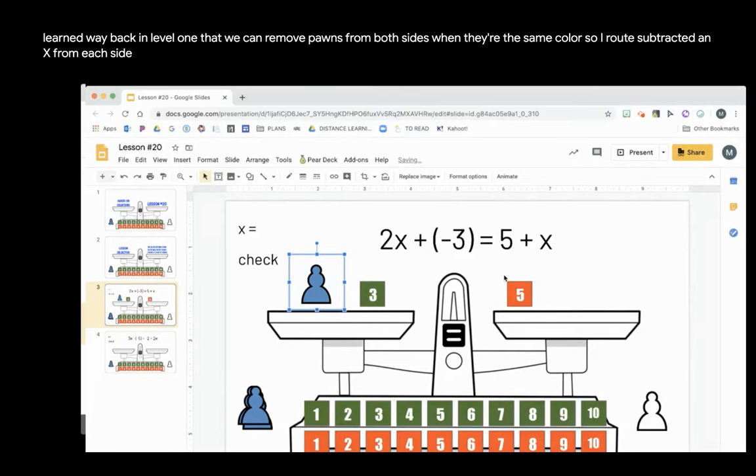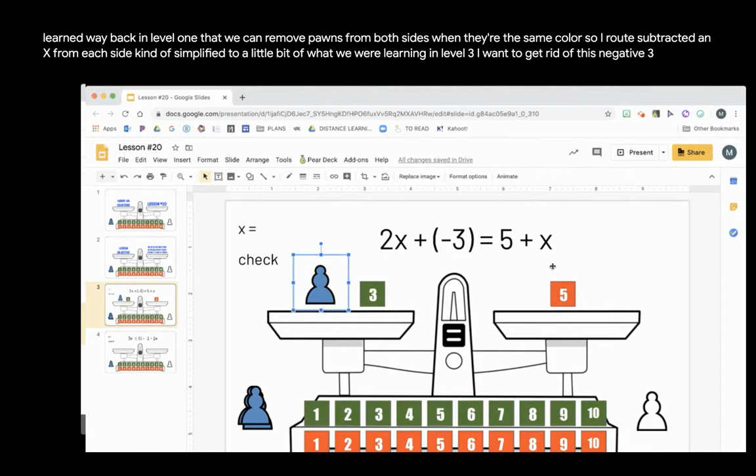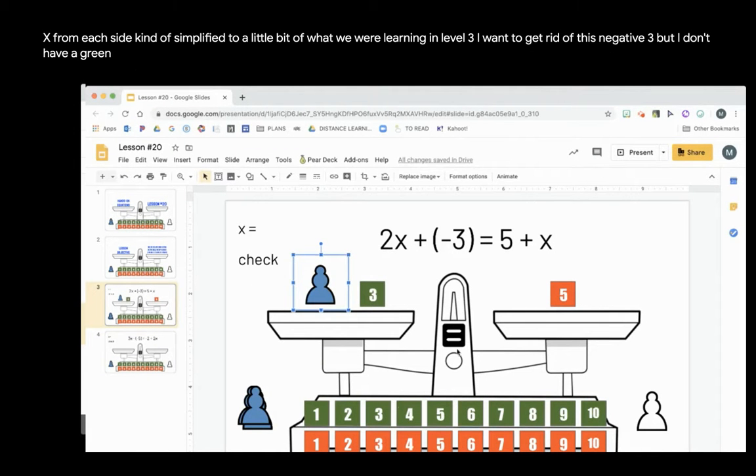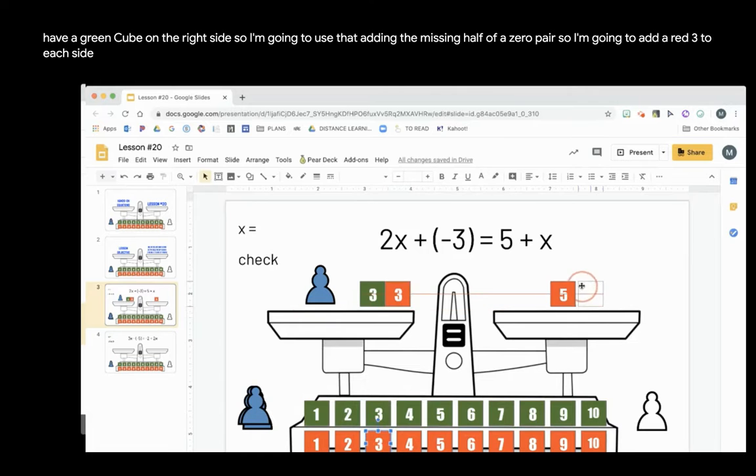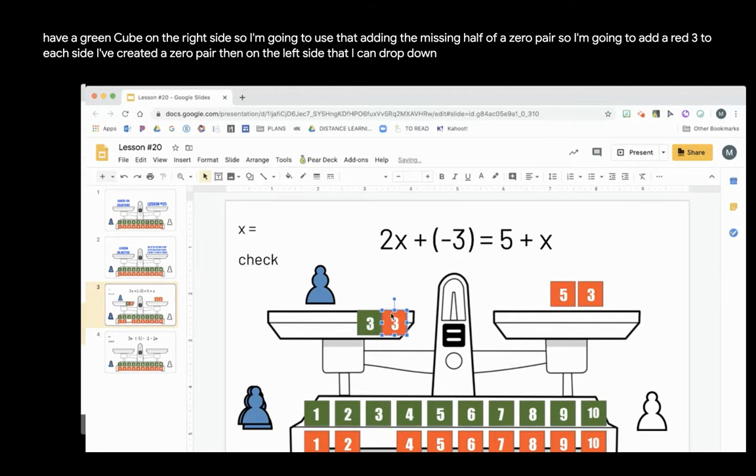Now I'm simplified to a little bit of what we were learning in level 3. I want to get rid of this negative 3, but I don't have a green cube on the right side. So I'm going to use that adding the missing half of a zero pair. I'm going to add a red 3 to each side. I've created a zero pair then on the left side that I can drop down.